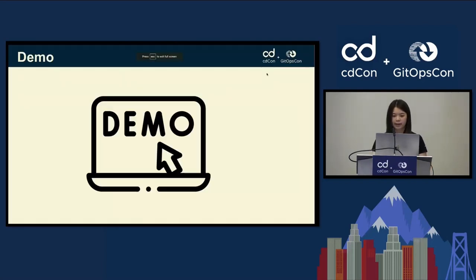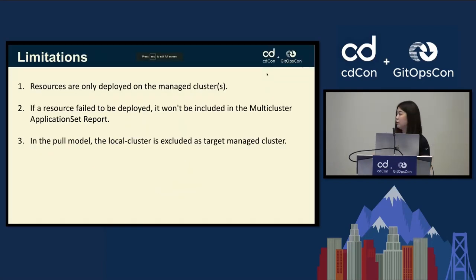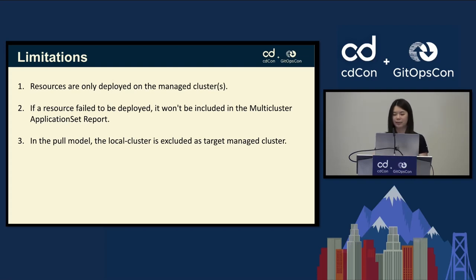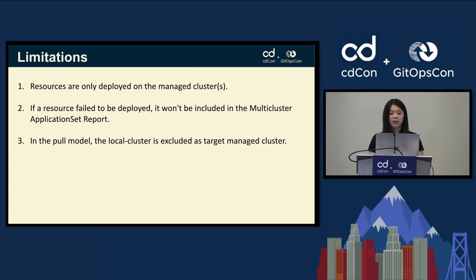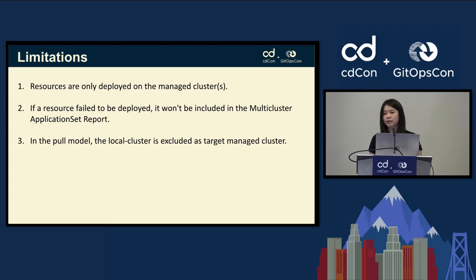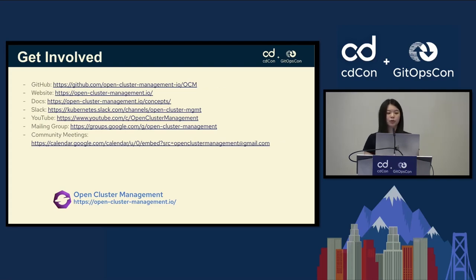The limitations: number one, we should have all resources from the managed cluster reflected on the hub, which doesn't happen for the fail state today. Number two, resources are only deployed on the managed clusters — with the pull model, they are not deployed on the hub cluster. Number three, in the pull model, we are excluding the local cluster as a target managed cluster.